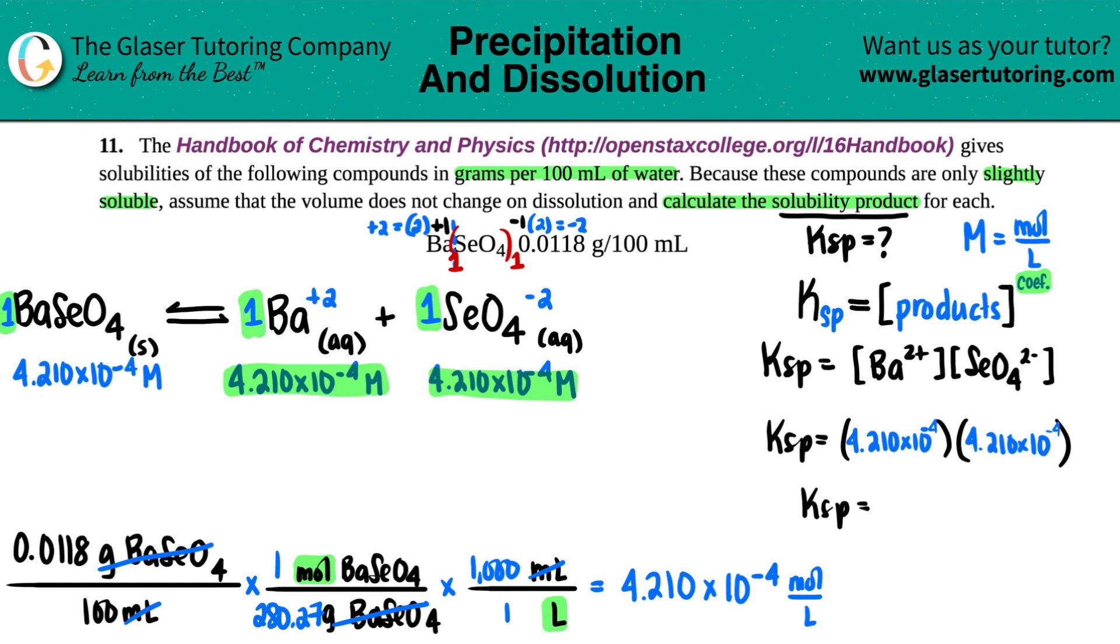Ksp equals 4.210 times 10 to the negative fourth squared, basically. And three sig figs, 1.77 times 10 to the negative seventh. No units on a Ksp. And that's the final answer, guys. What do you think?